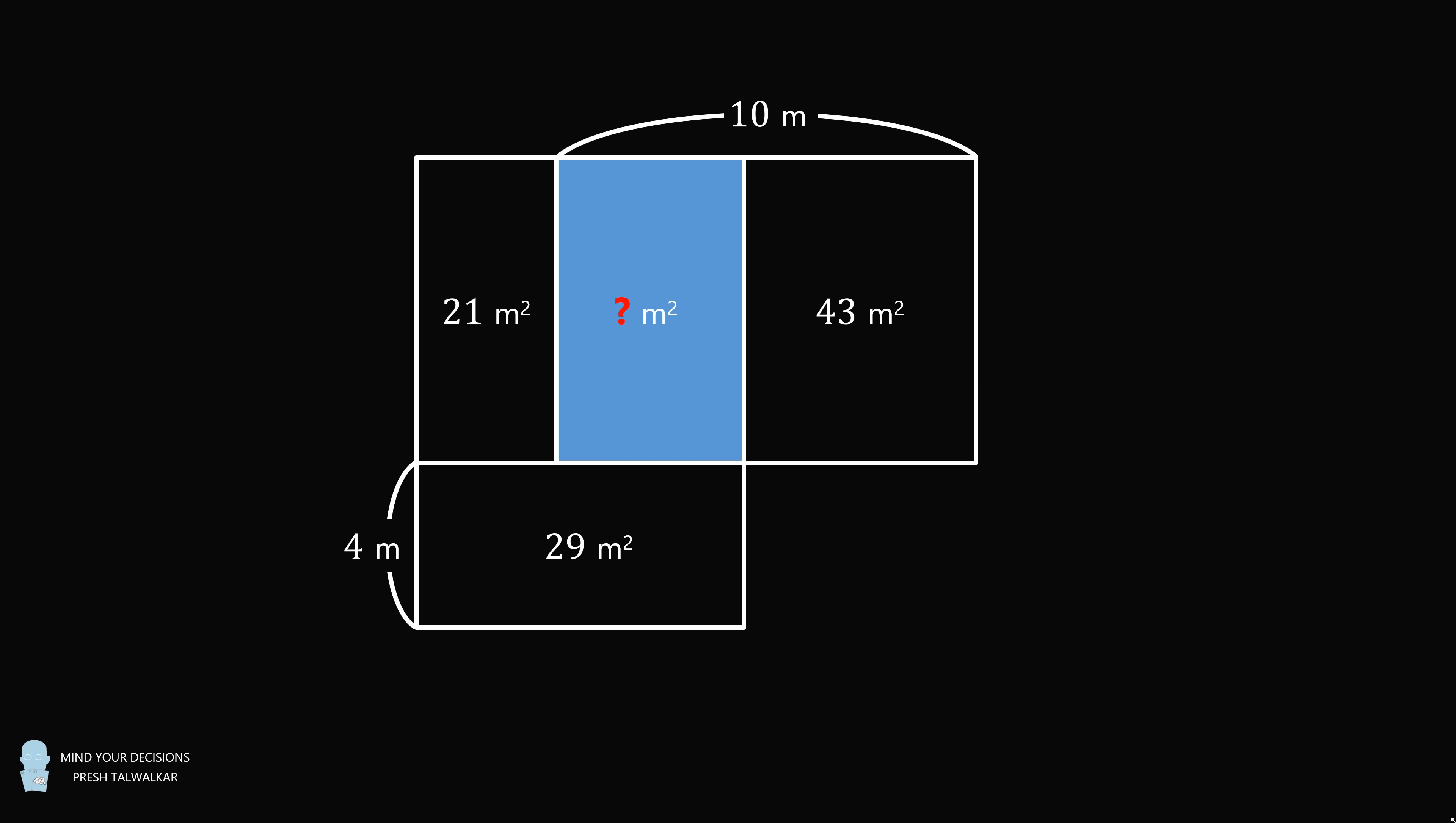The first row has three rectangles. Their areas are 21 meters squared, the second area is unknown, and the third area is 43 meters squared.